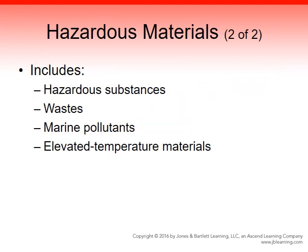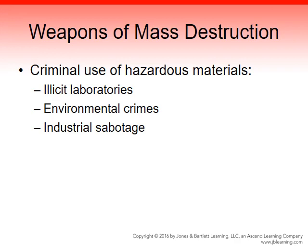Hazardous materials can include obvious things like hazardous substances — certain chemicals, gases, and acids — as well as hazardous waste such as nuclear waste or waste from chemical manufacturing, marine pollutants, and elevated temperature materials like hot tar. Weapons of mass destruction represent criminal use of hazardous material and can include illicit laboratories such as meth labs, environmental crimes, and industrial sabotage.